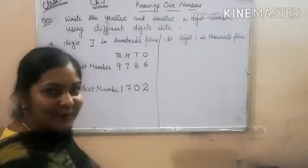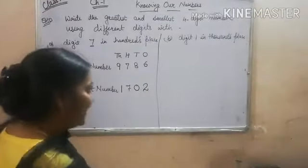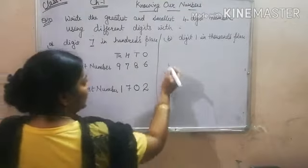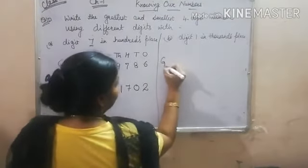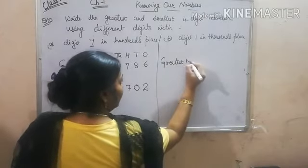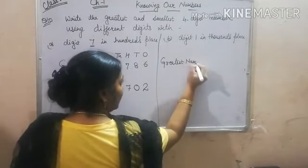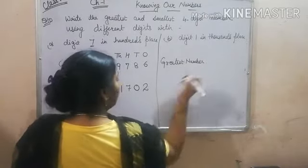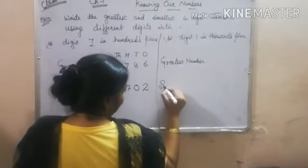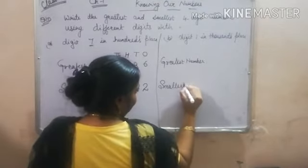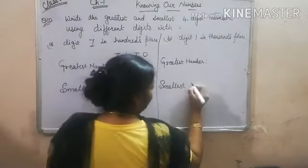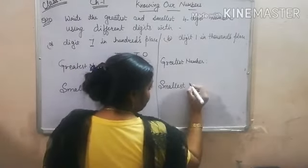The next one you can do easily. Do it fast — even faster than me. I am giving you time to do it. You can directly write the number using the short format GM and SM.